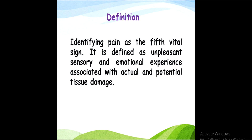In 2001, pain was considered the fifth vital sign because it is a very important parameter which affects the other vital signs like temperature, pulse, respiration, and blood pressure. When a patient is affected, the tissue is affected by chemical mediators, and when the chemical mediators affect the brain, the brain receives signals through the sensory pathway.